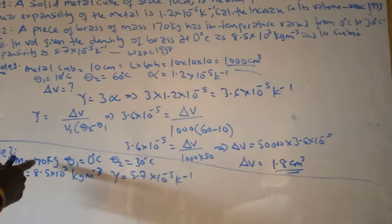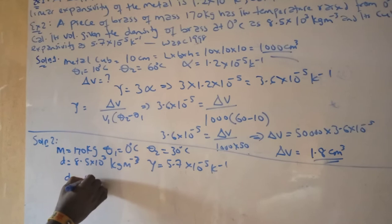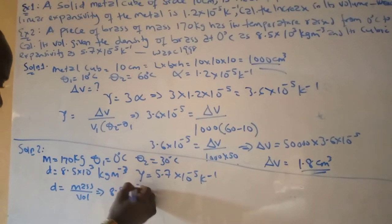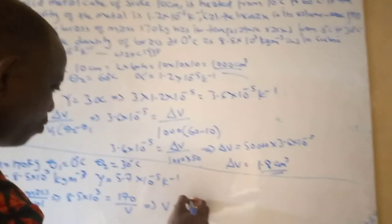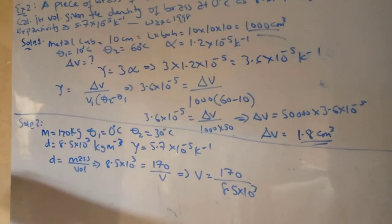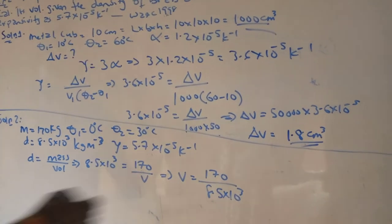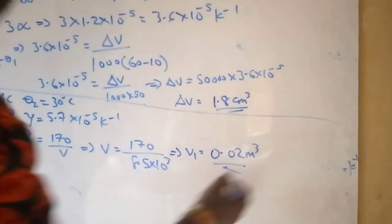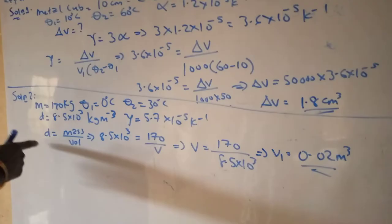They also gave us cubic expansivity: 5.7 × 10⁻⁵ per Kelvin. We have the mass and the density, so we can calculate the initial volume. Density equals mass over volume, so 8.5 × 10³ = 170 over V₁. Therefore, volume V₁ = 170 ÷ (8.5 × 10³), which gives us 0.02 m³. That is our initial volume.